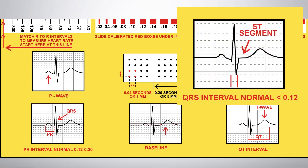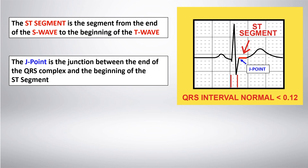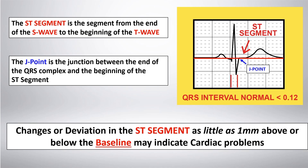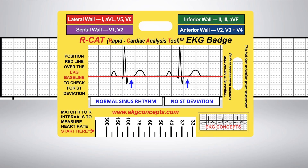Next, we'll look at the ST segment. The ST segment is the segment from the end of the S wave to the beginning of the T wave. The J point is the junction between the end of the QRS complex and the beginning of the ST segment. Changes or deviation in the ST segment as little as one millimeter above or below the baseline may indicate cardiac problems. Every cardiac interval, including ST deviation above or below, is measured on the baseline. Using the EKG badge in this example, you can see that the rhythm shows normal sinus rhythm with no ST deviation.